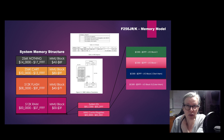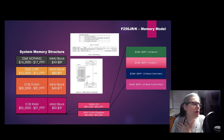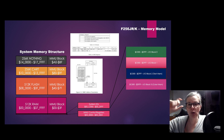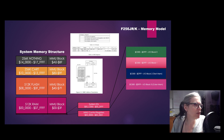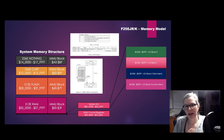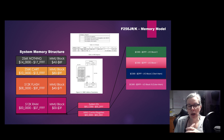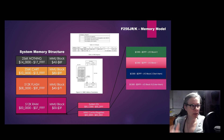Then we have 512K of flash, numbered 0x40 to 0x7F. Then there's the cartridge, which is a 256K region reserved for it, from 0x80 to 0x9F. After that there's essentially nothing - a big nothing burger above that in the 6502 version of this. The 6809 is a bit different but essentially that's what it is.